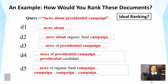To assess whether this simplest vector space model works well, let's look at an example. Here I show some sample documents and a sample query. The query is 'news about presidential campaign' and we have five documents that cover different terms from the query. If you look at these documents for a moment, you may realize that some are probably relevant and some are probably non-relevant.